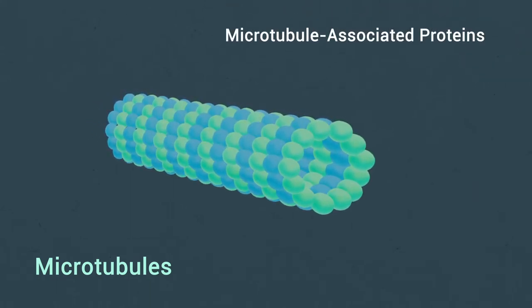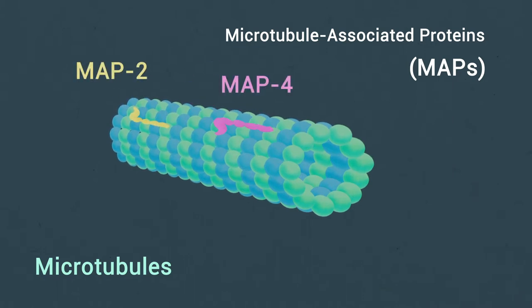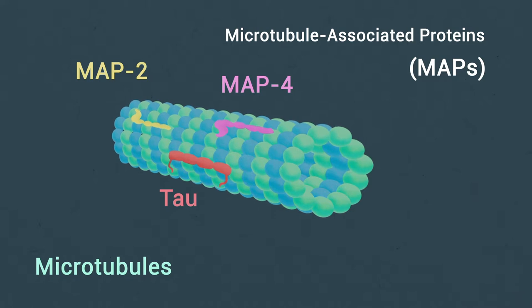They are regulated by microtubule-associated proteins or MAPs, including classical MAPs such as MAP2, MAP4, and Tau that are critical to neuronal growth and function.